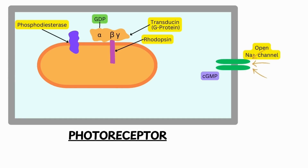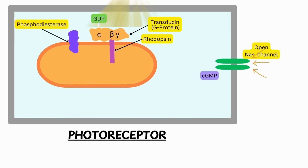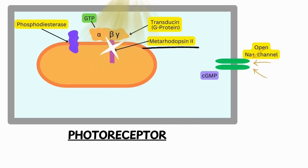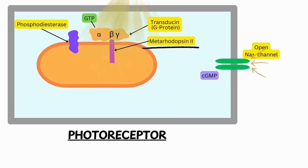Cyclic GMP in the cell helps in keeping the sodium channel open. When light falls on the receptor, metarhodopsin 2 will activate the transducin protein. Let's first see from where metarhodopsin 2 comes.